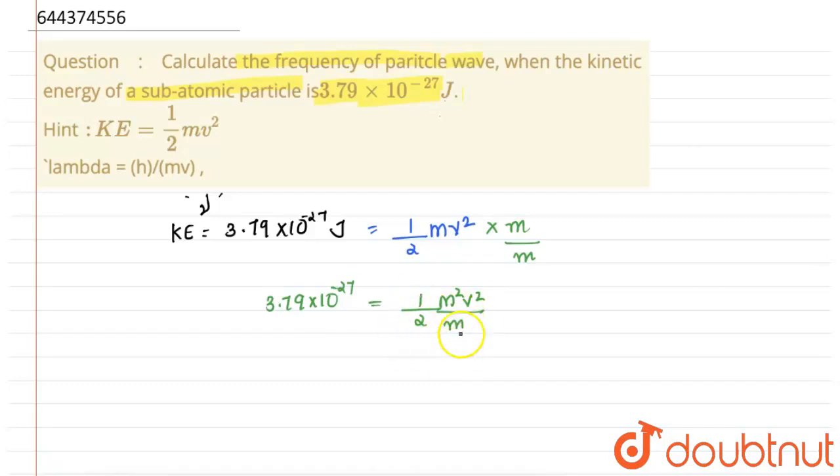Now we are going to take this 2m factor to the other side, so we will get the equation as m²v² = 3.79 × 10^-27 × 2m, where this mass is the mass of the subatomic particle.